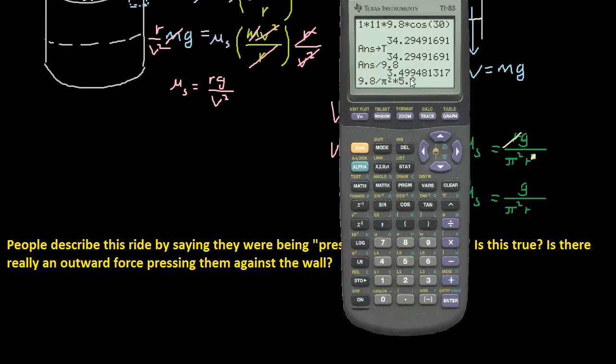Well, actually, since both of these are on the bottom and they're both dividing, they're in the denominator, you have to divide by 5.2. So that's like saying the same thing as 9.8 divided by the quantity of pi squared times 5.2. So that's what I got for my coefficient of static friction, and I am going to verify with the webassign. And the webassign says it's correct.